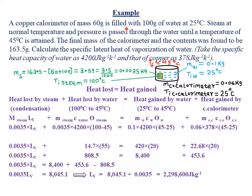Steam at normal temperature and pressure is passed through the water until a temperature of 45 degrees Celsius is attained. So the final temperature of the mixture is 45°C. It is important to note that steam is obtained by boiling water, and the boiling point of water is 100 degrees Celsius. So when we are told steam at normal temperature and pressure, it simply means that the initial temperature for the steam was 100 degrees Celsius, because water only starts boiling to form steam when heated to 100°C.